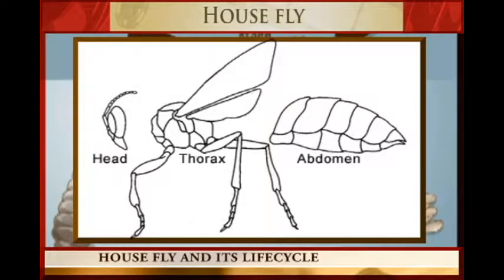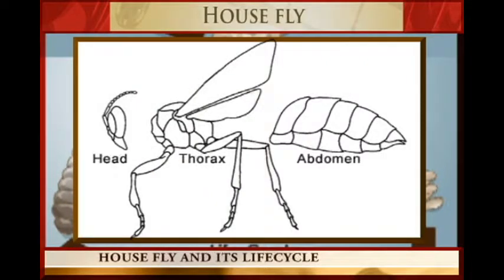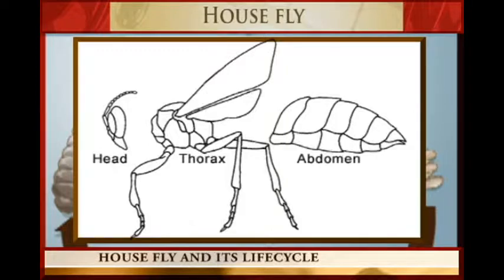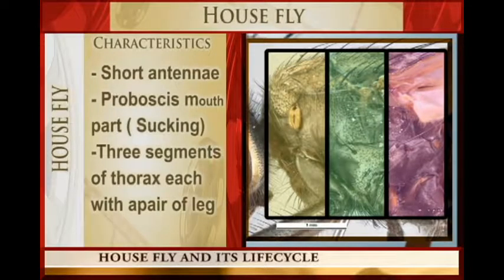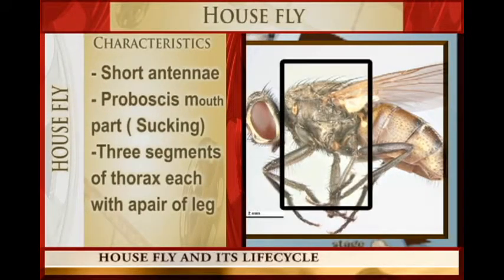The body is divided into segments. The body is divided into the head, the thorax, and the abdomen. The thorax has three segments, and each segment has a pair of legs.